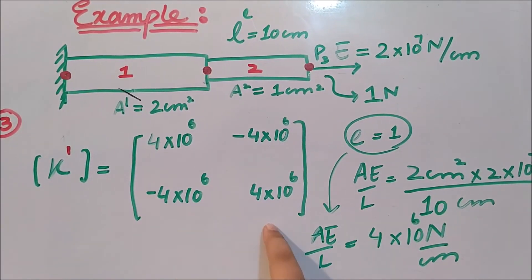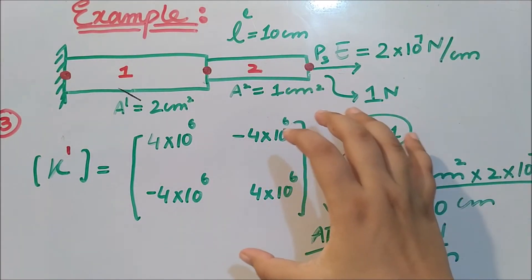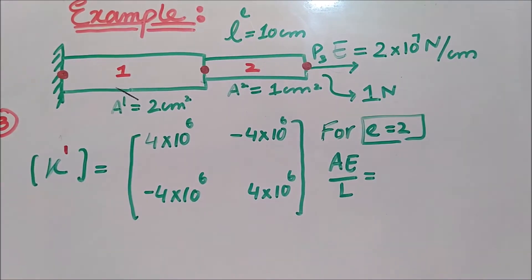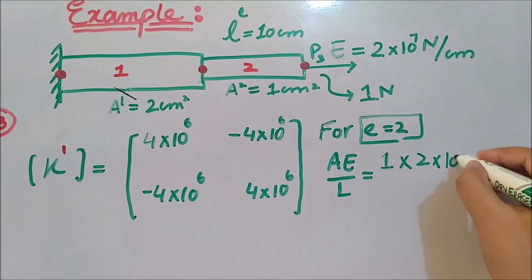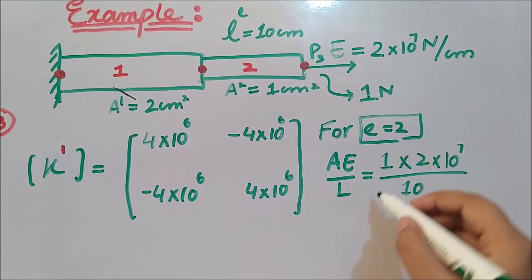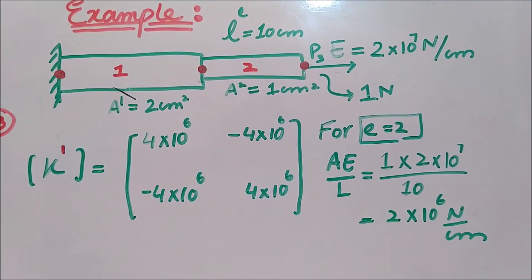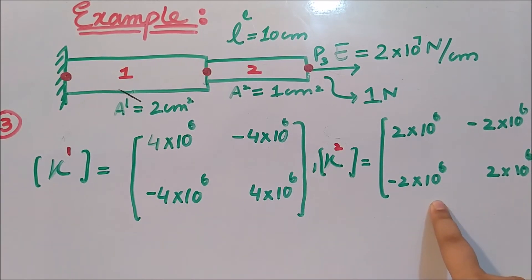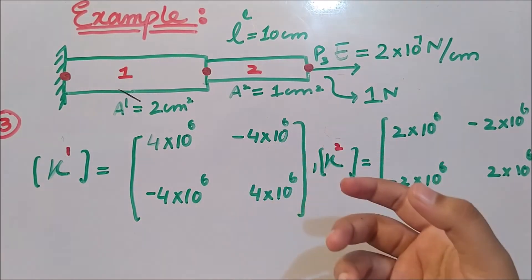For element 2: A2 = 1 cm², E = 2×10⁷ N/cm², L = 10 cm. So AE/L = (1 × 2×10⁷) / 10 = 2×10⁶ N/cm. We plug this into the stiffness matrix to get the stiffness matrix for element 2.